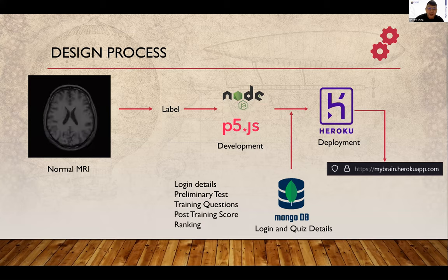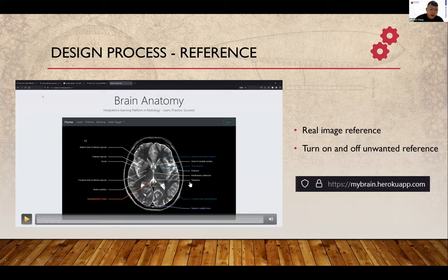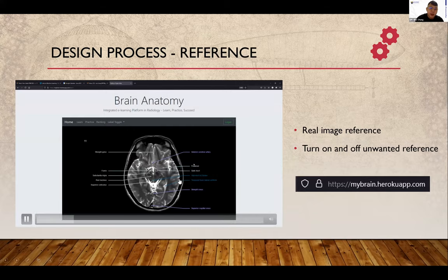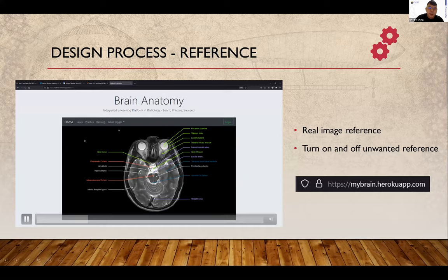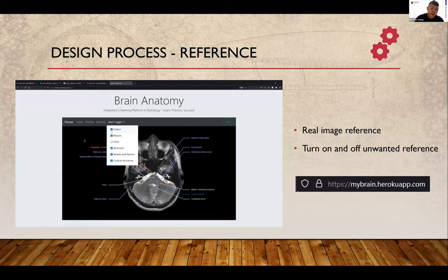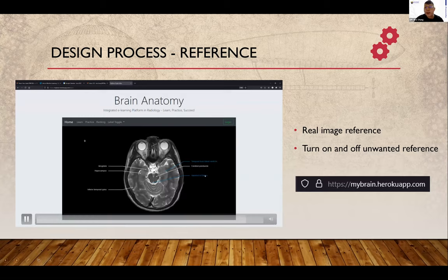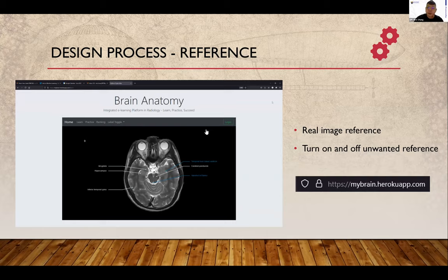Talking about the reference: this is the reference I've created. Let's say you're looking at a brain — you can scroll and all the labels are displayed. You can also toggle the atlas to remove unnecessary labels you don't need. For example, if you don't want to look at cisterns, muscles, or vessels, you can turn them off or on. So when students are reviewing an MRI and are not sure what they're looking at, they can come to this site and look at the reference structure. This is just the brain module.